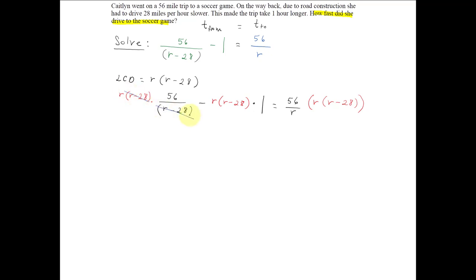We can see that some of these factors reduce out, like the r minus 28 in the first term. And we are left with 56r minus, notice it's just 1 times r times r minus 28 equal to, and here, notice the r's reduce out, and we're left with 56r minus 28.